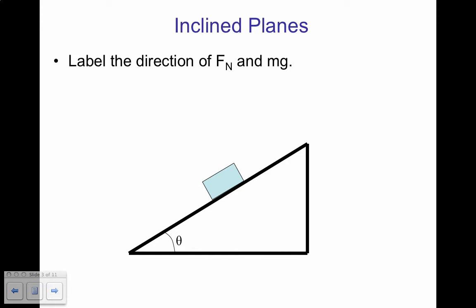All right, to start us off, we will label the direction of the normal force and the weight, or the mass times gravity force. Now, normal force always goes perpendicular to the surface, and weight always goes directly down. So we have normal force here, perpendicular to the surface, and we have weight, which is going to go straight down.